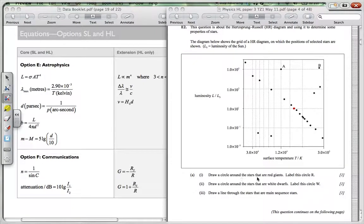So draw a circle around the red giants. Label that R. These over here would be your red giants. This one over here would be a super red giant. Because it's really big.